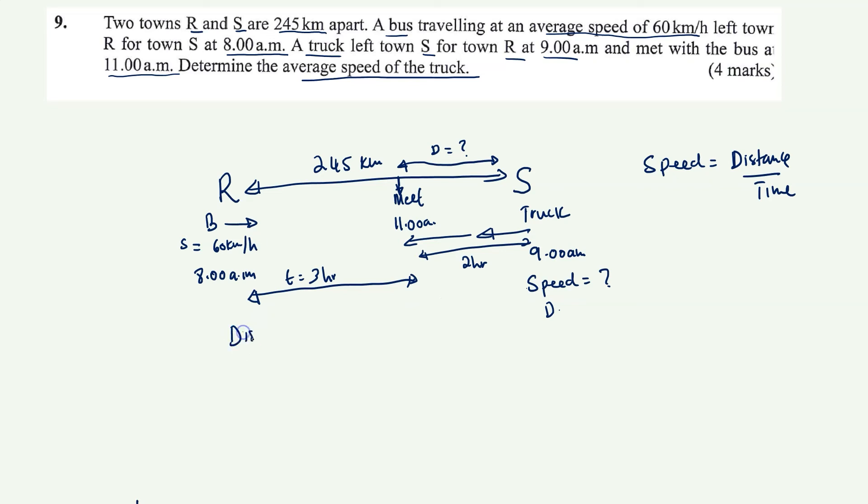So distance from R to the meeting point is going to be equal to speed times time. So speed is 60 and time is three. And this is going to be 180 kilometers. Good. So now I know from R to the meeting point is 180 kilometers, which means from there to there is going to be 245 take away 180, which is going to be 65 kilometers. So now for the truck, I have a time and I have the distance it traveled from S to the meeting point.